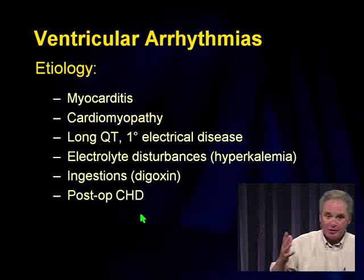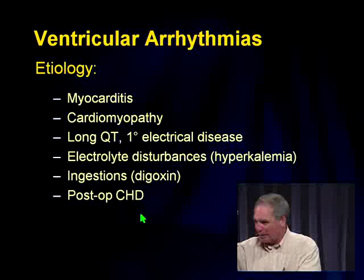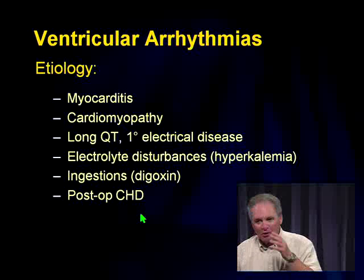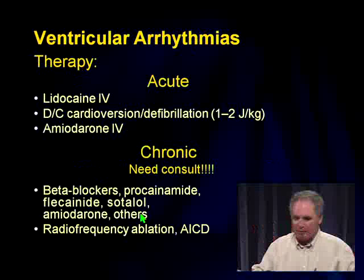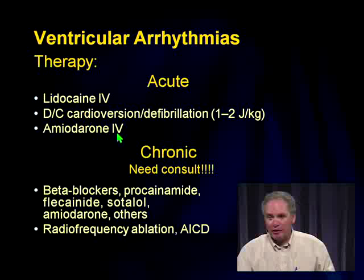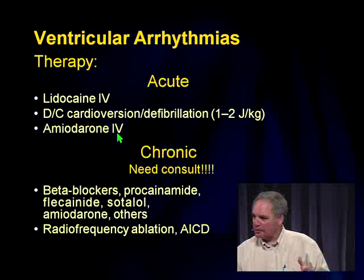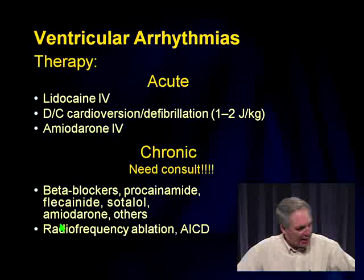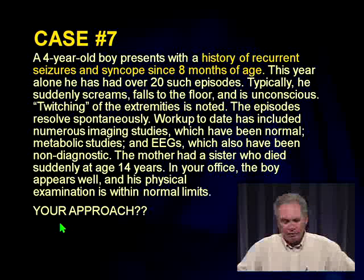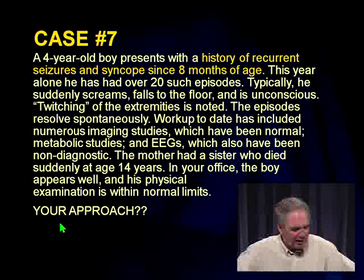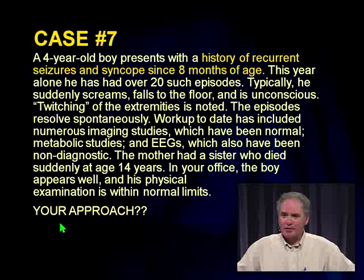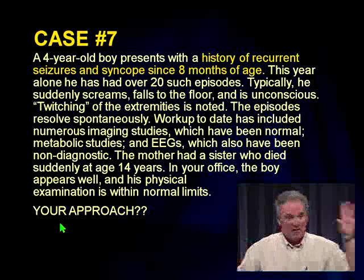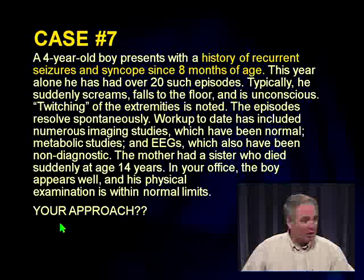For acute ventricular tachycardia: cardiovert or defibrillate if unstable; IV amiodarone is the drug of choice. A four-year-old with recurrent syncope and seizures — worked up with MRI and EEG without diagnosis. A cardiologist placed an EKG lead; the child fell and had what appeared to be a seizure. Key history: the mother had a sister who died suddenly at age 14. The EKG during recovery showed a polymorphic ventricular tachycardia — torsades de pointes.